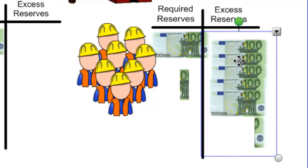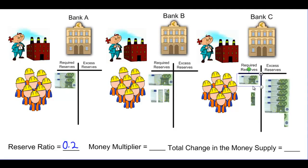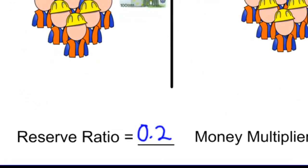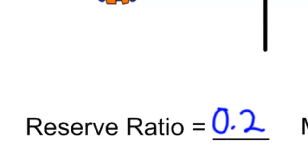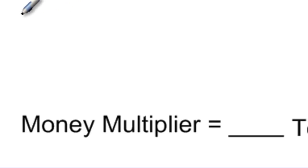Of course this process will continue. Bank C will lend out its excess reserves to yet more borrowers who will spend that money on the production of goods, employ more workers who will spend that money, and it will ultimately be deposited in yet another bank. All along the way, more money is being created. How can we say money is created even though this whole process started with an initial deposit of just 1,000 euros? The money supply in a nation is not simply the base of currency that exists — rather it is a multiple of that monetary base. A nation's money supply includes all the money that exists in checking accounts and savings accounts in the banking system. With a reserve ratio of 0.2 there is a multiplier effect when there is an initial change in deposits in the banking system. To determine the total change in the money supply resulting from the initial change of 1,000 euros, we must calculate what is called the money multiplier.